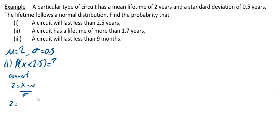We're going to convert using Z equals X minus μ over σ. So Z in this case is my X value, which is 2.5 minus my μ, which is 2, divided by my σ, which is 0.5. If 2.5 minus 2 is just 0.5, 0.5 divided by 0.5 gives you 1. So you're really looking for Z is less than 1.